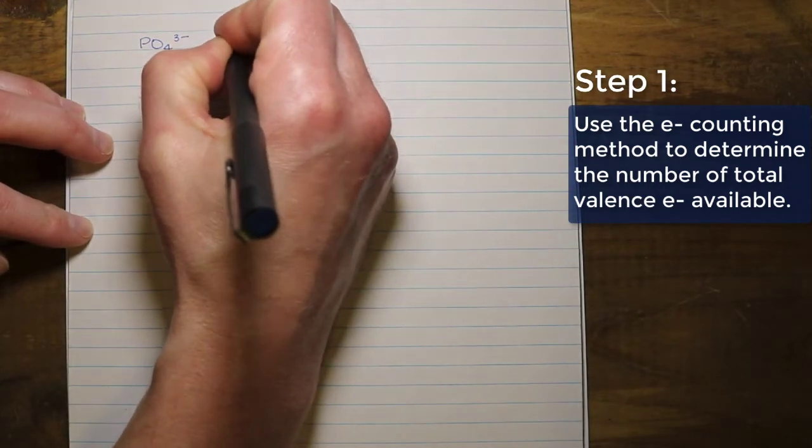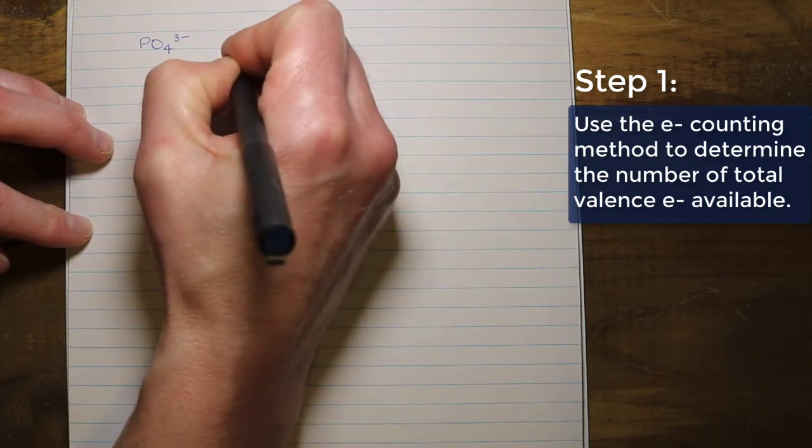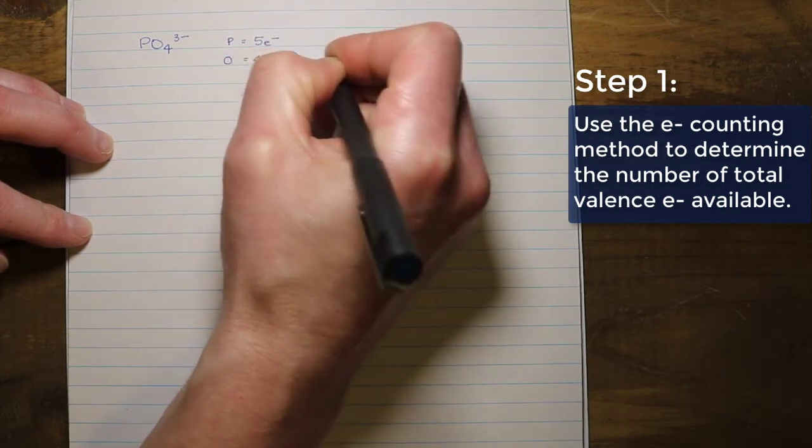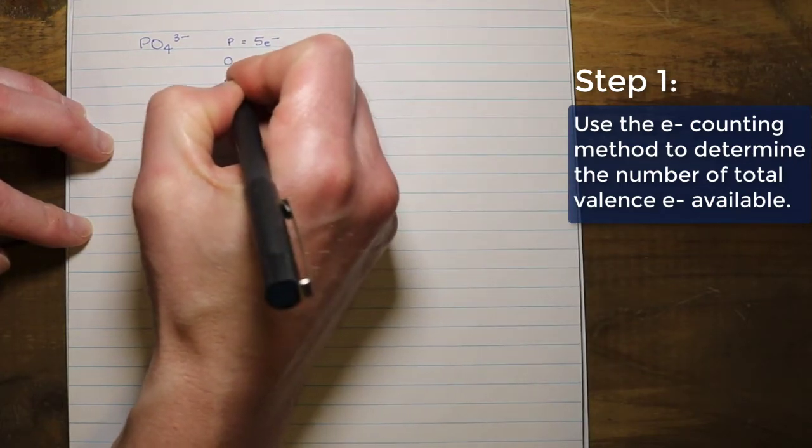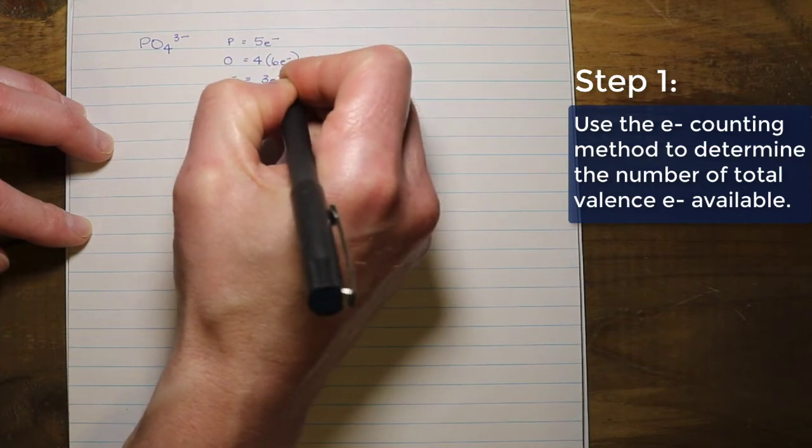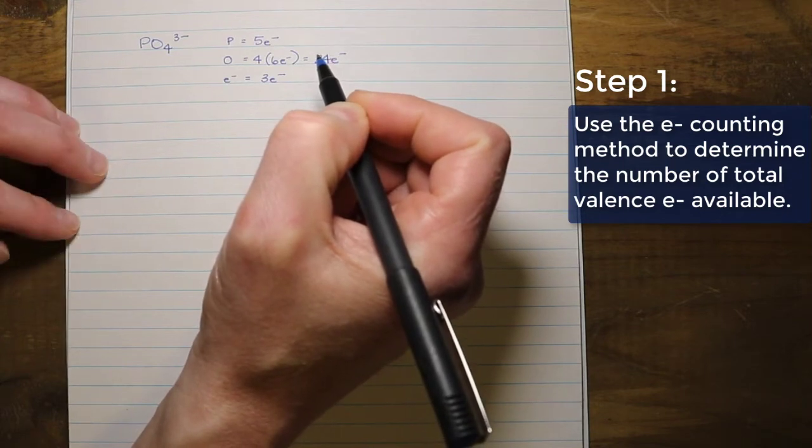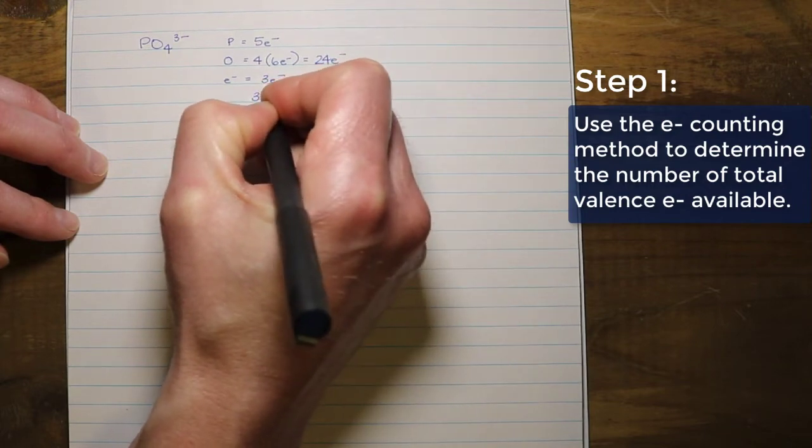We are going to first start by counting the number of valence electrons that we have to play with. If I do my electron count, I can see for phosphorus based on the periodic table that I'm going to have five electrons. In terms of what oxygen brings, I have four oxygen that each have six valence electrons. So that gives me a total of 24 valence electrons contributed by all of the oxygen. And in terms of the extra electrons that I have, I have three extra electrons. We have to remember that this three minus gives us three additional electrons. So the total number of electrons that we have here is 32 total electrons for this structure.